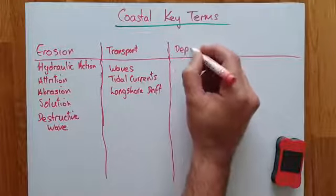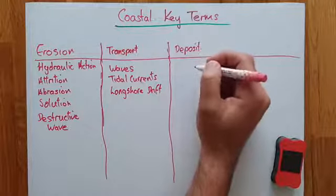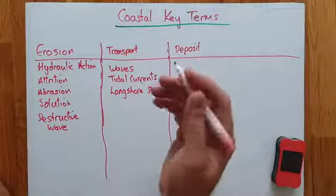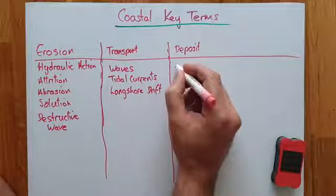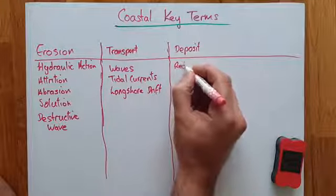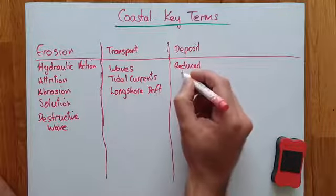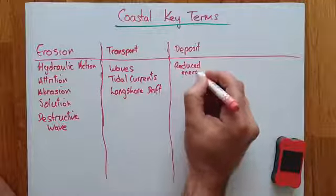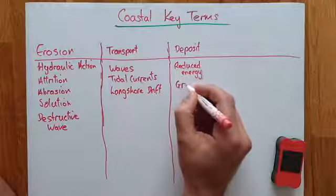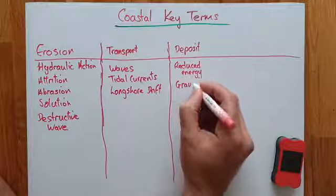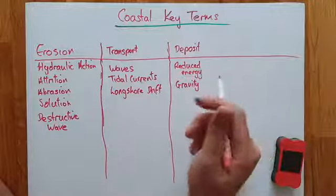The next section is deposition — material that's moved from one part of the beach is deposited somewhere else. This takes place because the water loses energy. Reduced energy, much like we saw when we studied rivers, means gravity is constantly pulling the sediment down to the bottom.